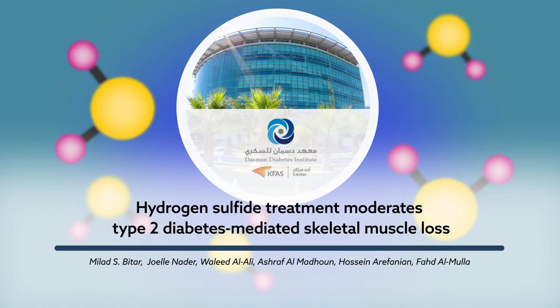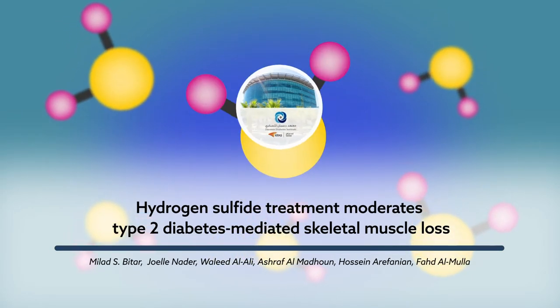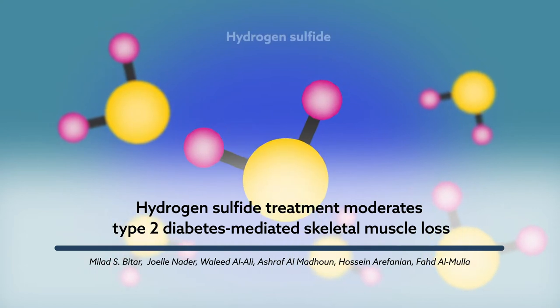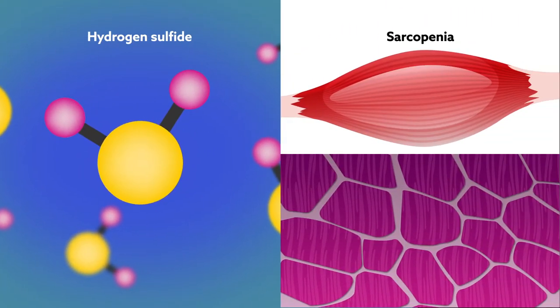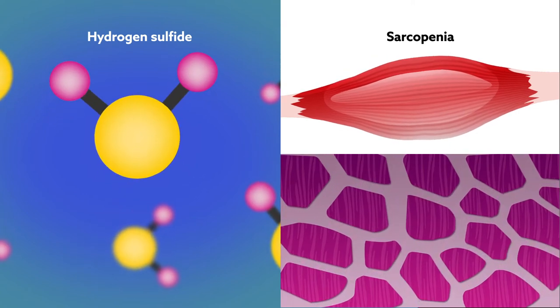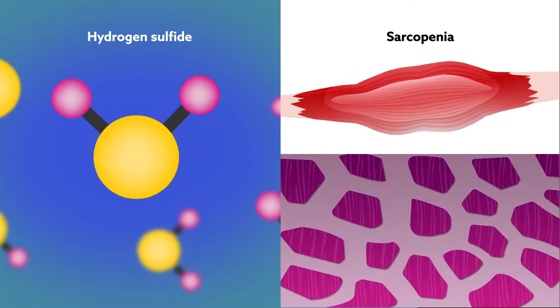A recent study published in the Journal of Oxidative Medicine and Cellular Longevity suggests that the molecule hydrogen sulfide can help mitigate sarcopenia, a disease characterized by decreased muscle loss and function that often leads to disability in patients with diabetes.